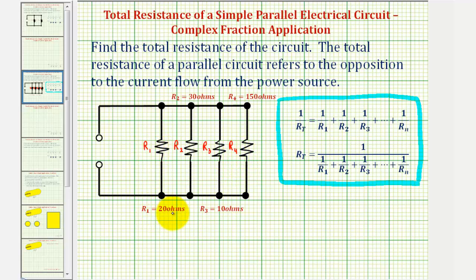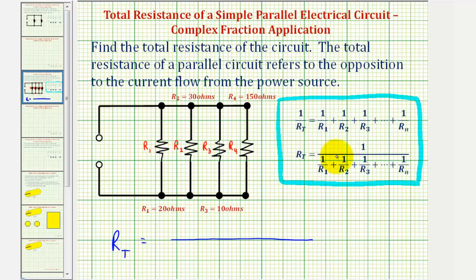R sub 1 is equal to 20 ohms, R sub 2 is equal to 30 ohms, R sub 3 is equal to 10 ohms, and R sub 4 is equal to 150 ohms. Which means the total resistance R sub T is going to be equal to a fraction where the numerator of the denominator is one, and the denominator is the sum of the reciprocals of R sub 1, R sub 2, R sub 3, and R sub 4.